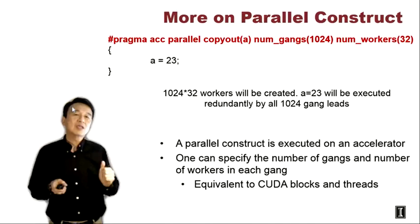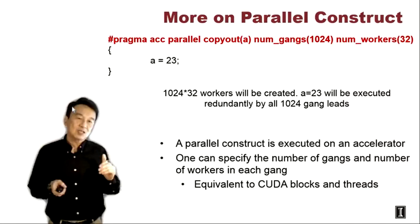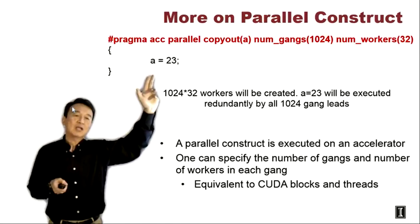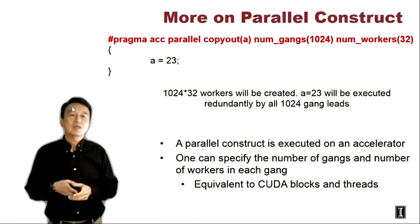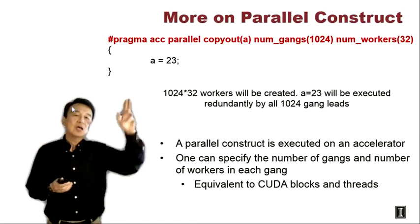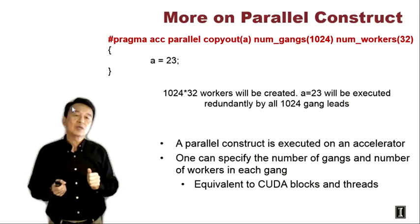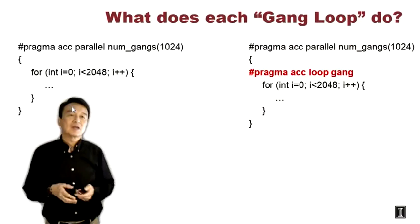All workers will execute this region redundantly and in parallel, but the redundant execution only happens at the gang level. There will be one representative called the gang lead in each gang to execute the statement. So there will be 1,024 instances of this statement executed by the 1,024 gang leads. This generates the equivalent of a CUDA kernel launched with 1,024 thread blocks, where one thread in each thread block executes this statement.